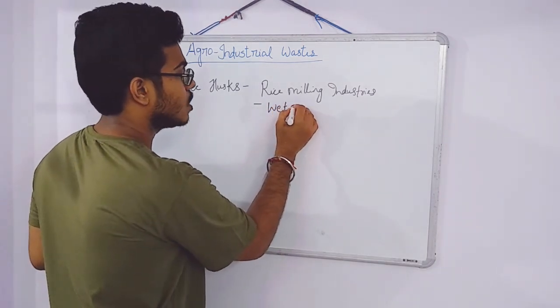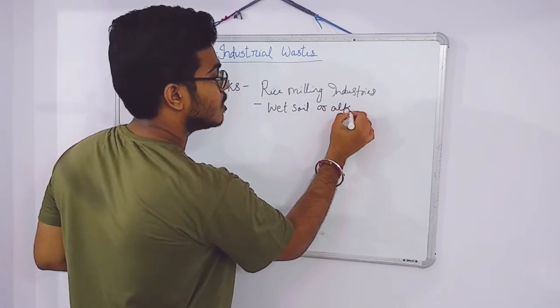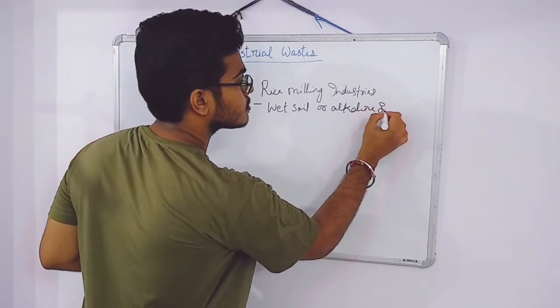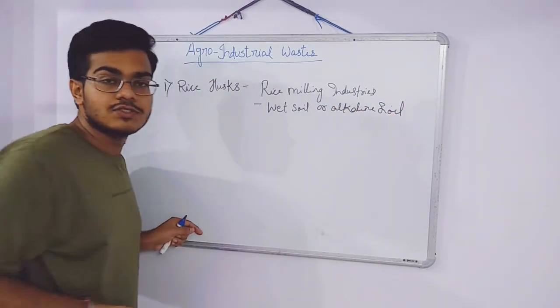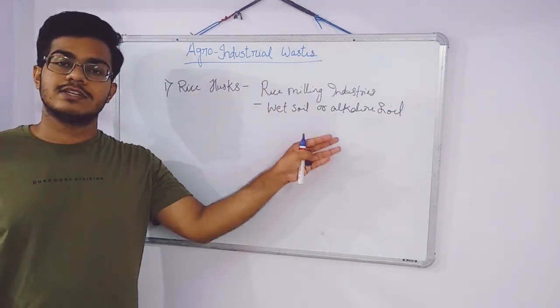When rice husk is used in wet soil or alkaline soil, it increases the physical conditions of the soil.